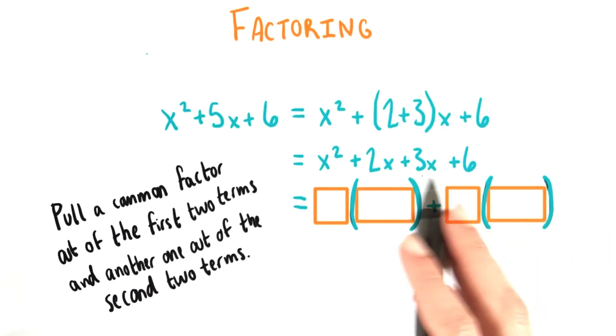And then do the same thing for the second pair of factors. Find a common factor and factor it out. Then write the expression that you have after that right here.